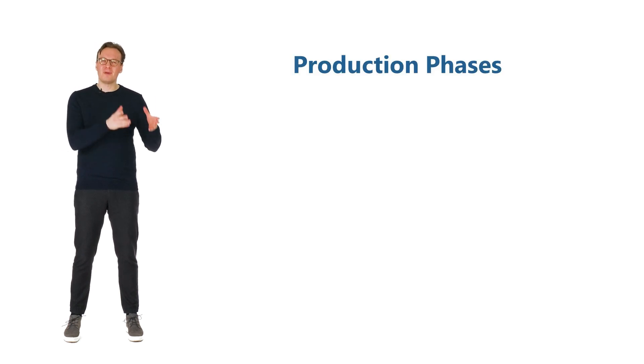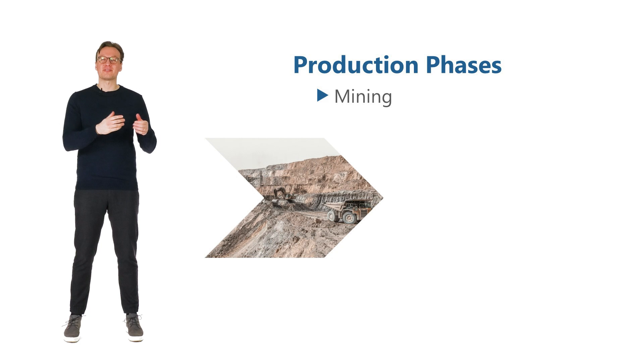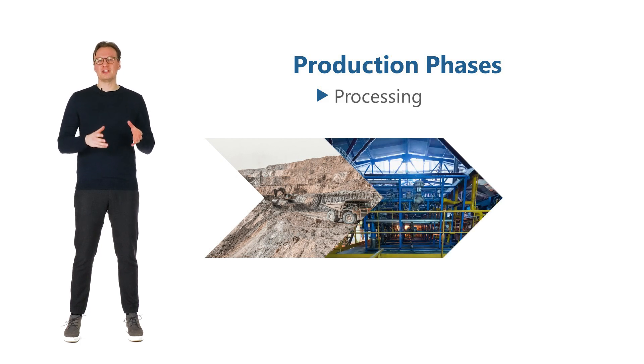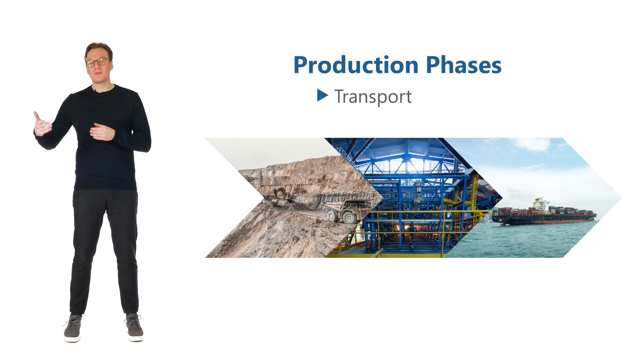Big picture, there are often three main phases of a production cycle. We start with mining, extracting materials out of the ground. We process the material into a product that we sell, and we transport that product to a buyer.